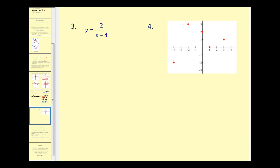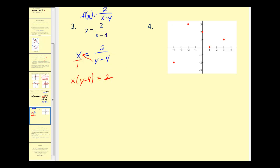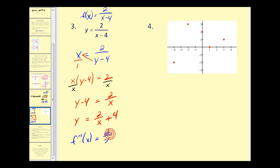Let's look at two more. Again, we have a function given as one-to-one, so we interchange the variables to get x equals two divided by the quantity y minus four. The original function was f of x equals two divided by x minus four. To solve for y, we perform cross multiplication: x times the quantity y minus four equals two. Dividing by x gives y minus four equals two divided by x. Adding four to both sides and replacing y with inverse notation gives f inverse of x equals two divided by x plus four.